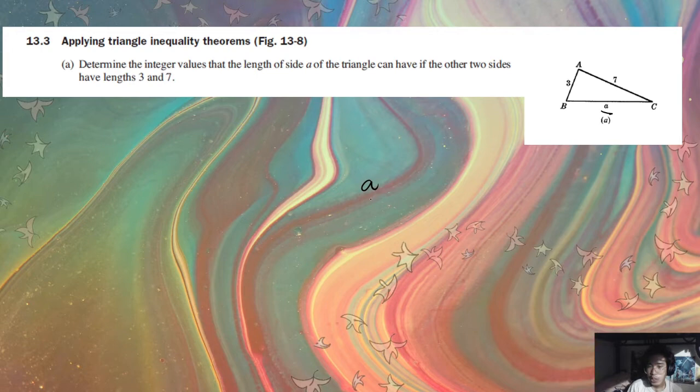Okay, so you put the missing side measurement at the center, and then you put two greater than marks. Okay, so what's going to be the range? It's going to be the difference of the two sides and the sum of the two sides.